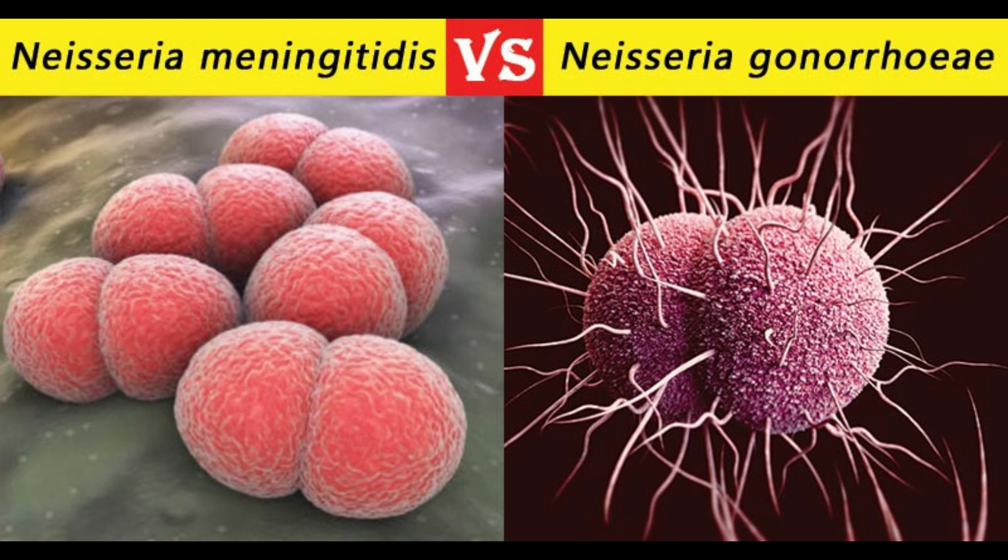29. Presence in inflammatory exudates: N. gonorrhoeae found in pus in larger proportions; N. meningitidis in less numbers. 30. Prevalence and mortality: N. gonorrhoeae infections have a high prevalence and low mortality; N. meningitidis infections have a low prevalence and high mortality. 31. Superbug: N. gonorrhoeae is considered a superbug; N. meningitidis is not. 32. Vaccines: no vaccine for N. gonorrhoeae; group A, B, C, Y, and W-135 meningococcal infections can be prevented by vaccines.